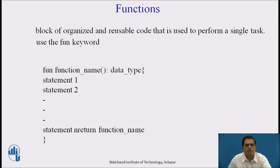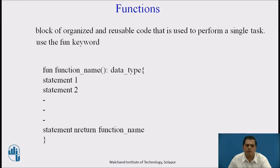Functions in Kotlin support a block of organized statements to execute code. A function is a block of organized, reusable code used to perform a single task. We use the fun keyword to declare a function. The syntax is: fun functionName(): DataType { statement1; statement2; return value }. We define the function name, declare the return data type, write all the statements, and at the end return the value.